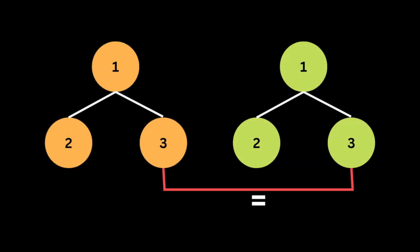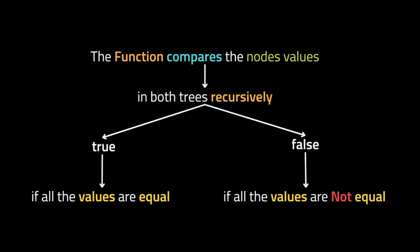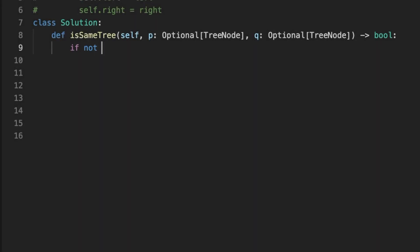Then the function calls itself recursively on the right subtree of the root node, with arguments being the right child of the first tree and the right child of the second tree. It compares their values — in this case they are the same, so it returns true. Once the recursion reaches the leaf nodes of both trees, the recursion terminates and returns true. In summary, the function compares node values in both trees recursively and returns true if all values are equal, false otherwise.